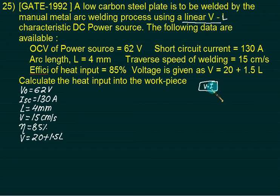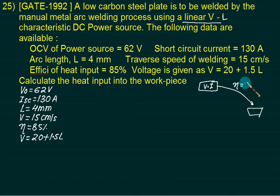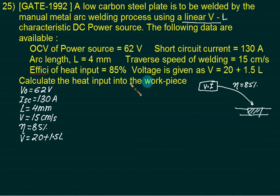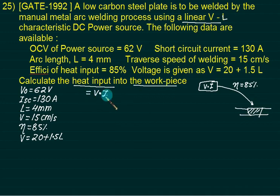The power source here is V multiplied by I. From this, we have transferred the heat to our joint. From here to here, is it efficiency? How much is this efficiency? 85. So, is it heat utilized? This one is the heat input into the work. So, what we want is: heat input into the work equals V multiplied by I multiplied by efficiency.